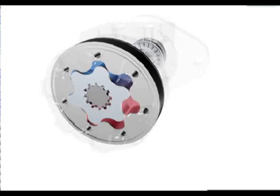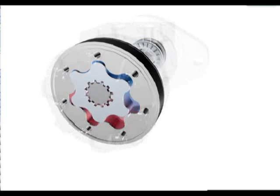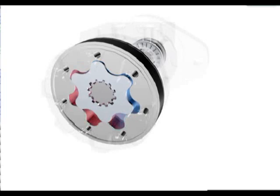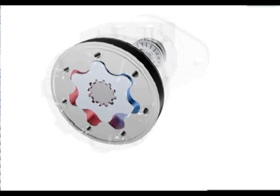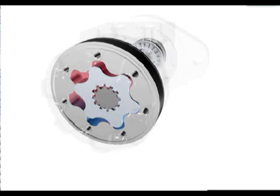Fluid enters the high pressure cavity and as pressure builds, the rotor tooth is forced off of the stator tooth. This causes the rotor and the rotary valve to rotate slightly. The output shaft, which is connected to the rotor by the drive coupler, also rotates slightly. Fluid on the opposite side of the cavity is forced through the rotary valve to the outlet port. As the rotor moves, the next rotor tooth and stator tooth oppose each other. The rotary valve allows fluid to enter the high pressure cavity in its new position and the cycle begins again.